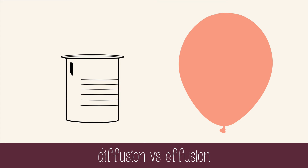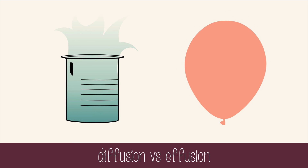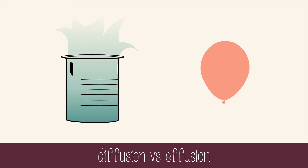Gases can diffuse and effuse, which sounds similar because they actually are very similar. If you've ever smelled an open perfume bottle or a candle from across the room, it's because particles are diffusing across the room. These molecules will tend to move from an area of high concentration to an area of low concentration until it reaches some kind of equilibrium. In effusion, gases escape through tiny holes in their container. Balloons have very small pores in the rubber surface, and gases will slowly effuse through these holes, so over time a balloon will shrink in size as gas escapes.